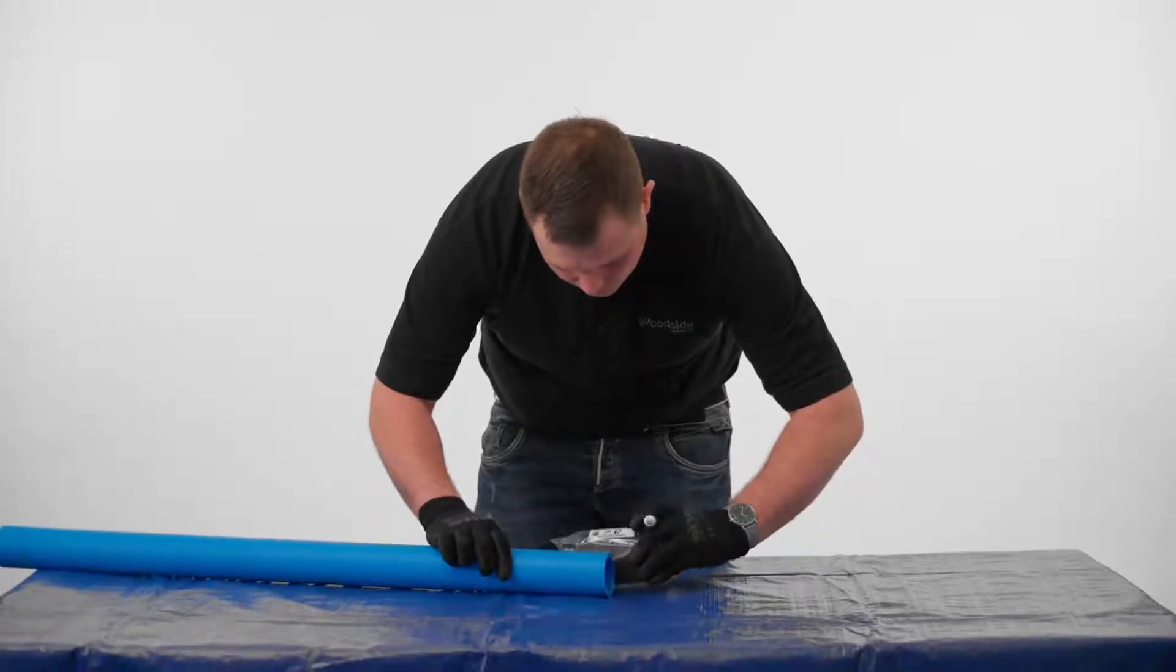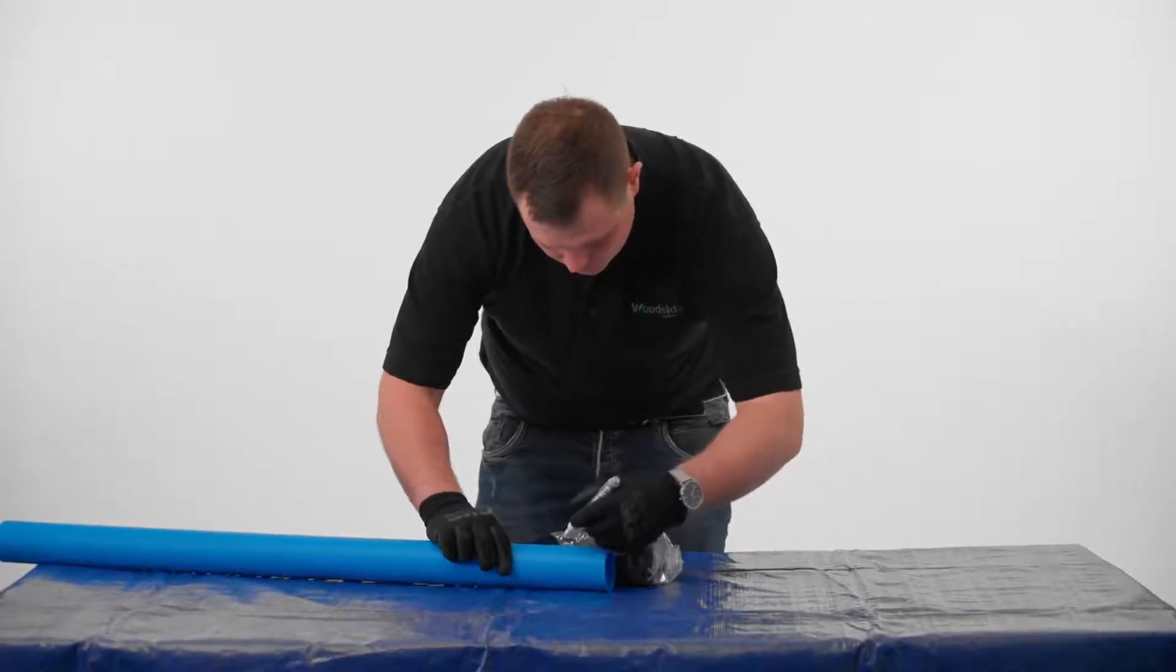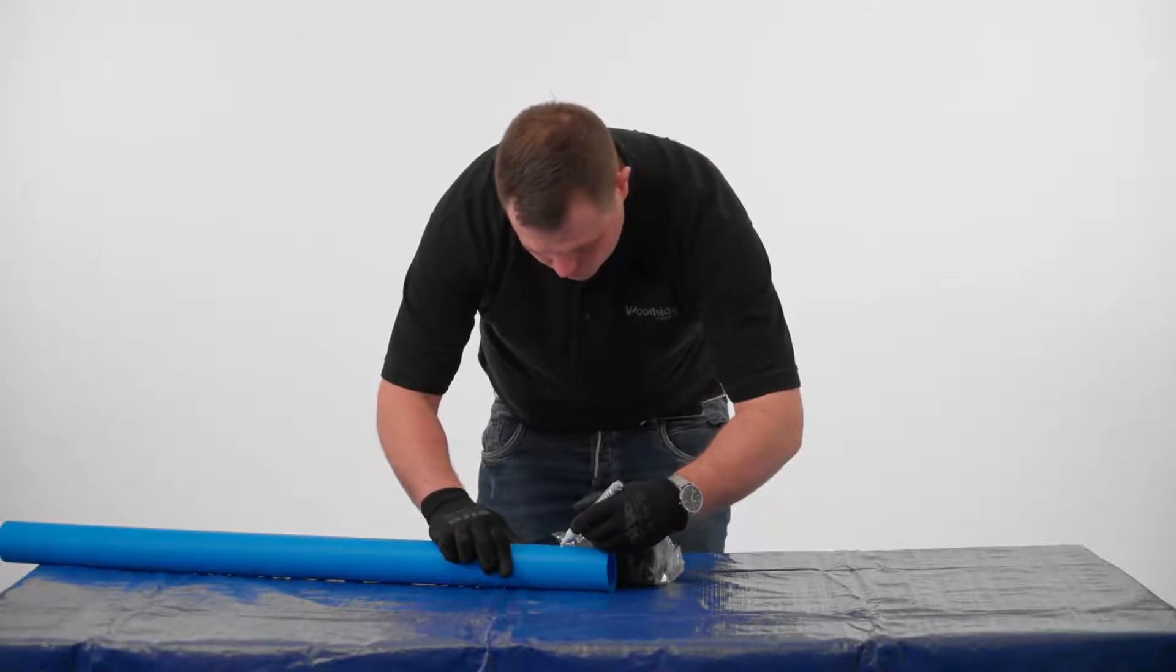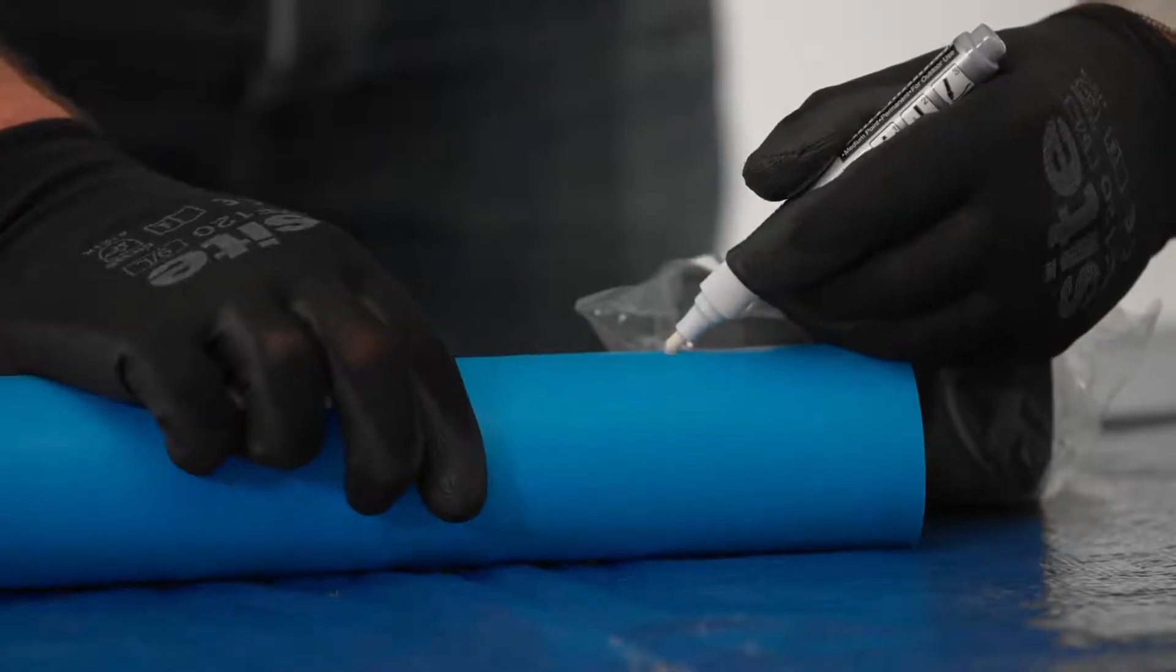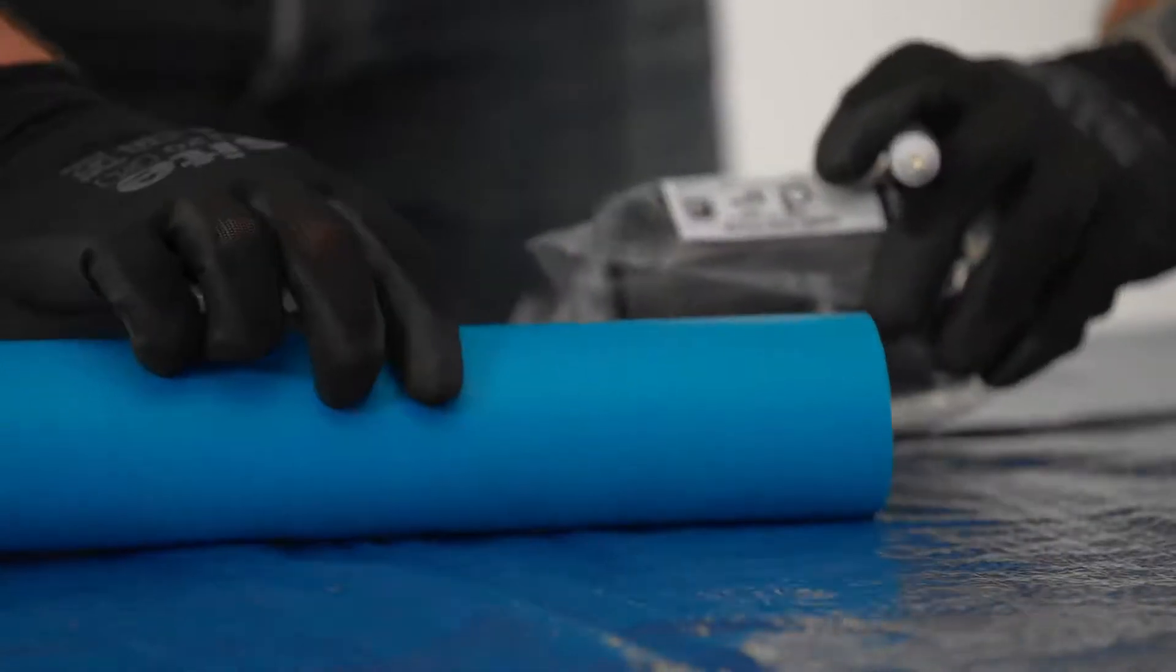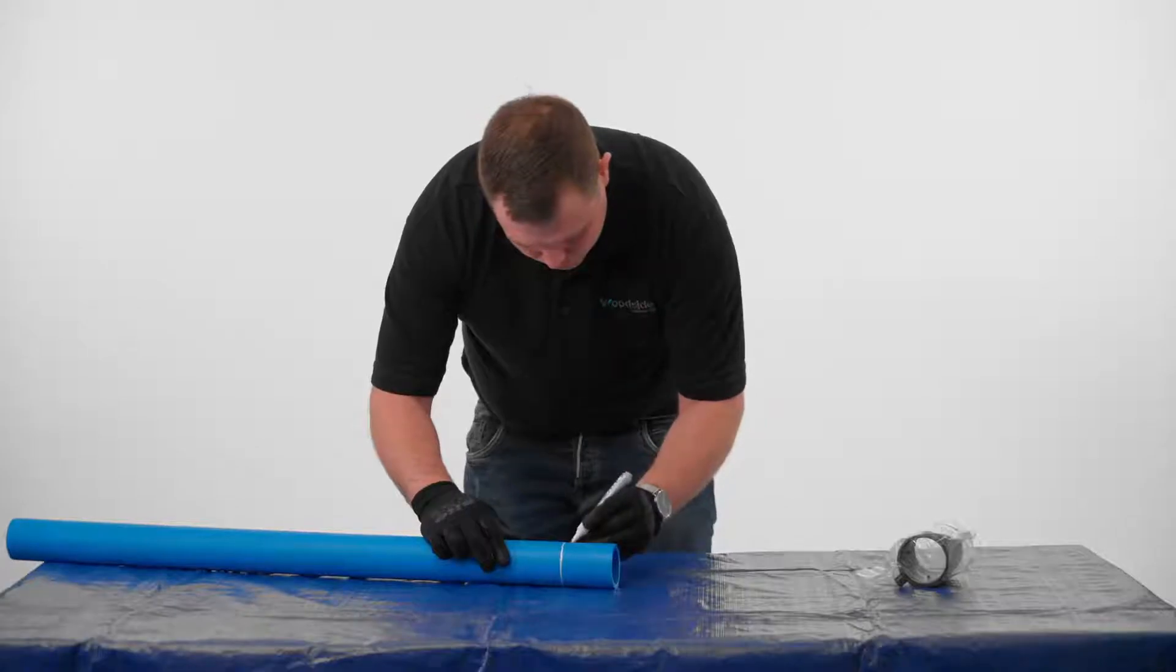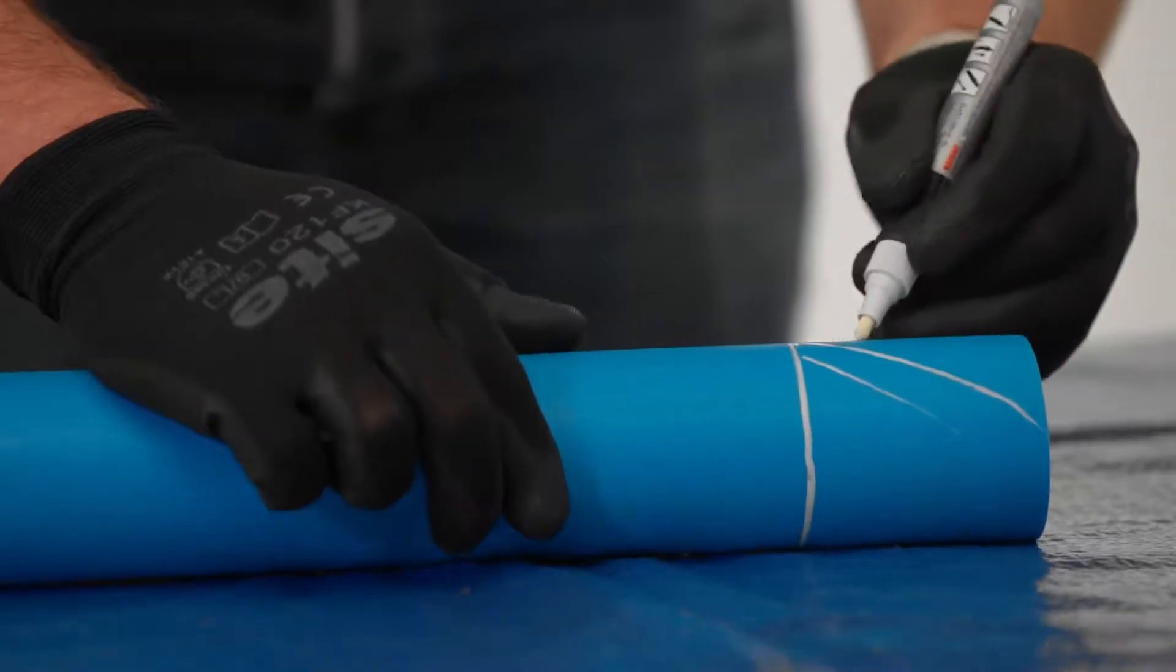Hold the middle of the bagged fitting alongside the end of the pipe and mark the pipe approximately 20 mm past the end of the coupler. This is to ensure you scrape and prepare enough pipe. Take a suitable marker pen and mark the pipe with hatched markings.